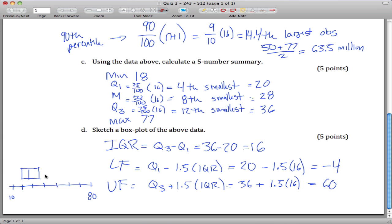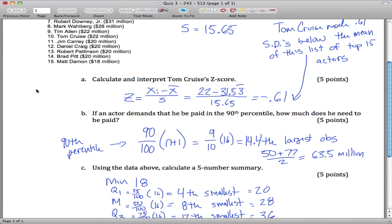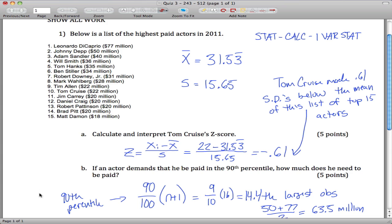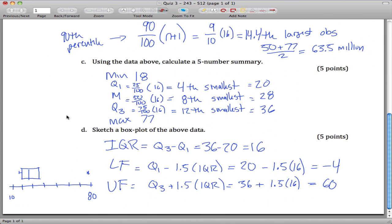My smallest observation is 18, just barely over here. My largest observation is 77, but 77 is above my fence, so it's an outlier. I leave it out here with an asterisk. My next largest observation was 50, so I'm going to use that and draw things like that.